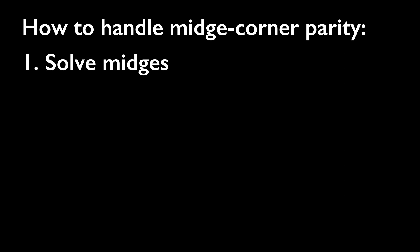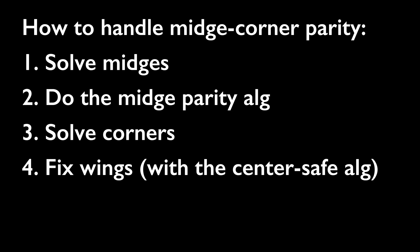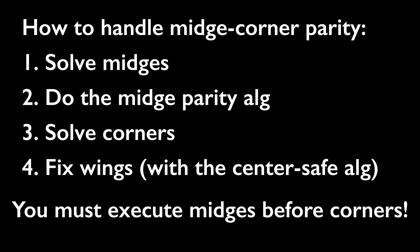To summarize, here's how we handle midge corner parity: solve midges, do the midge parity alg, solve corners, and then fix wings with the centersafe alg. This method of handling parity only works if you execute midges before corners. If you're wondering what order to memorize and execute, I will go over that later in this video.